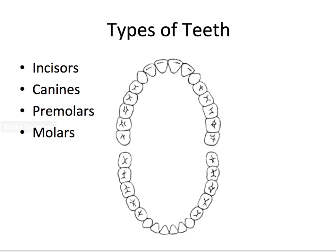For types of teeth, they're oriented by their location, their shape, and their function. The incisors refer to the front four teeth, and this is the same for both the maxillary arch and the mandibular arch. The incisors are used for incising or slicing food. They're important for aesthetics because they're in the front, and important for phonetics — for example, when pronouncing F and V sounds, your incisors contact your lower lip.